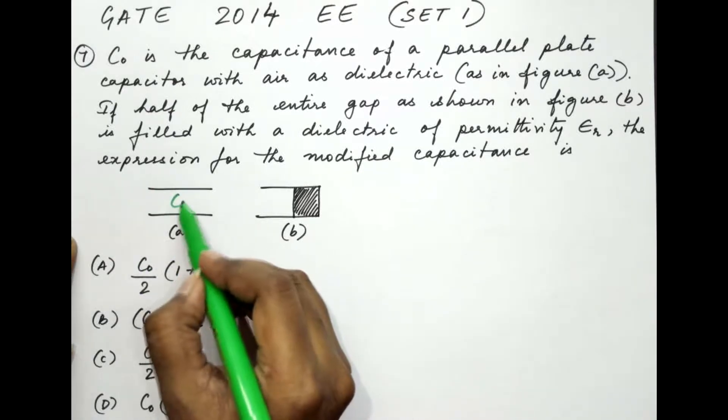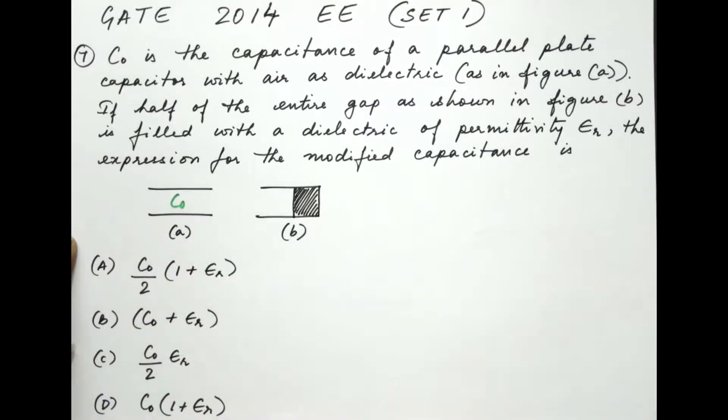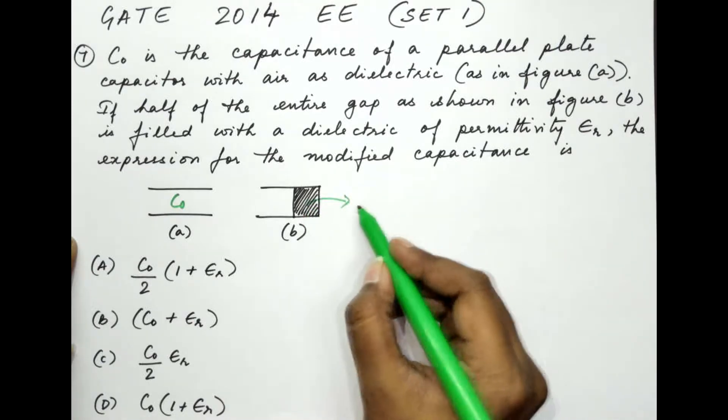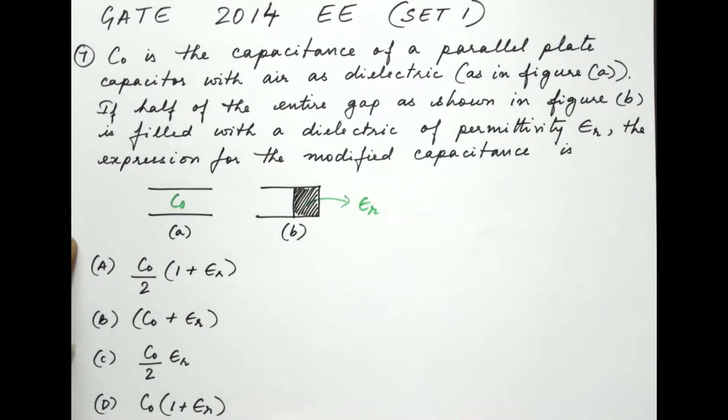So here we have C0 is the capacitance. If half of the entire gap as shown in figure B is filled with the dielectric of permittivity epsilon R, the expression for the modified capacitance is. We have four options given to us. Now in order to solve this problem, we will have to take a look at both the figures, figures A and B.